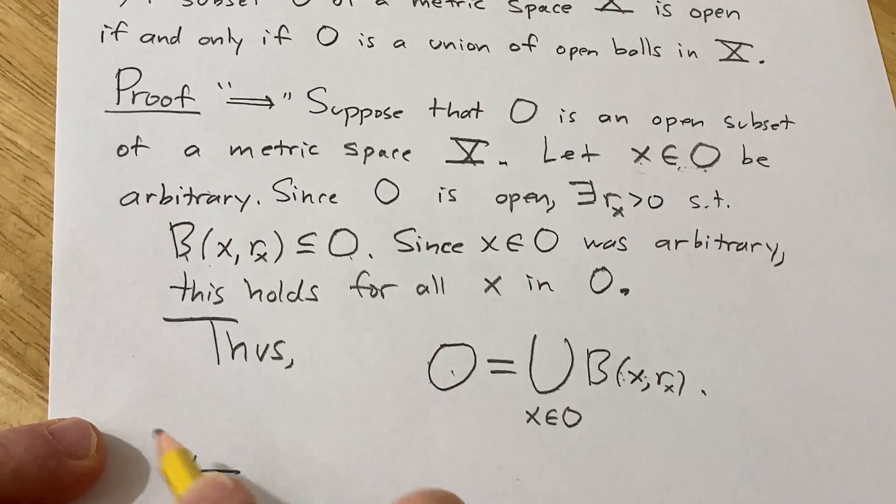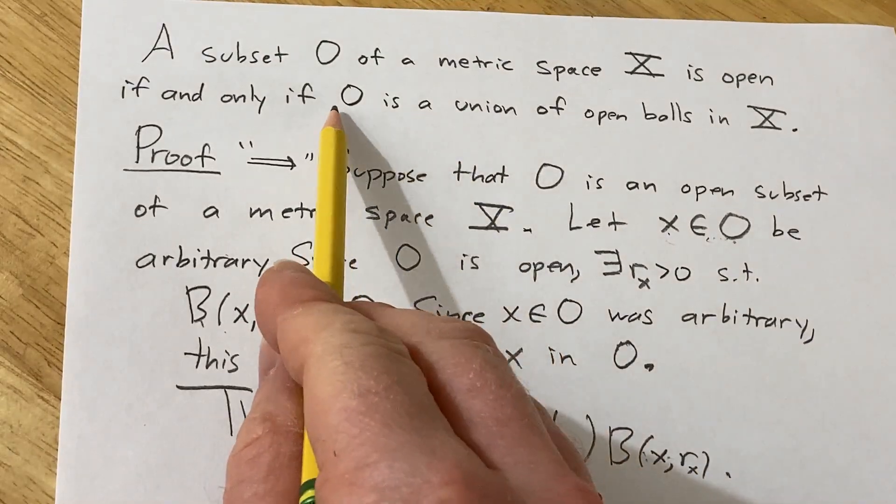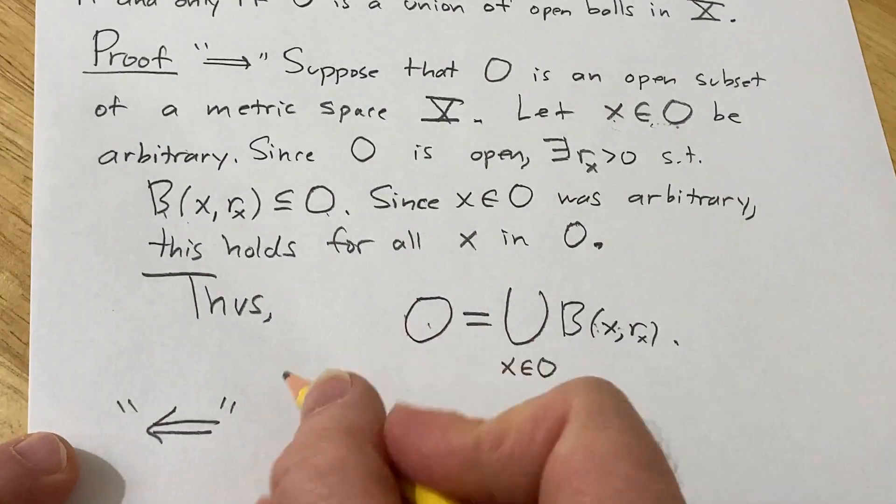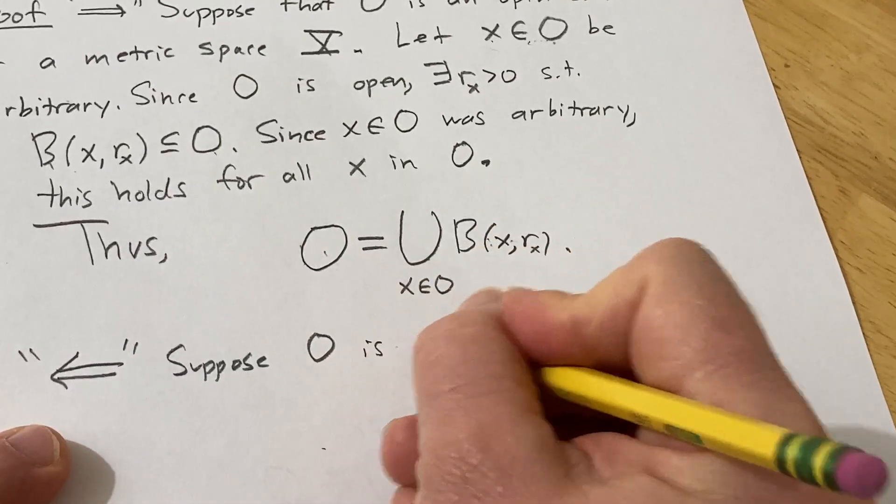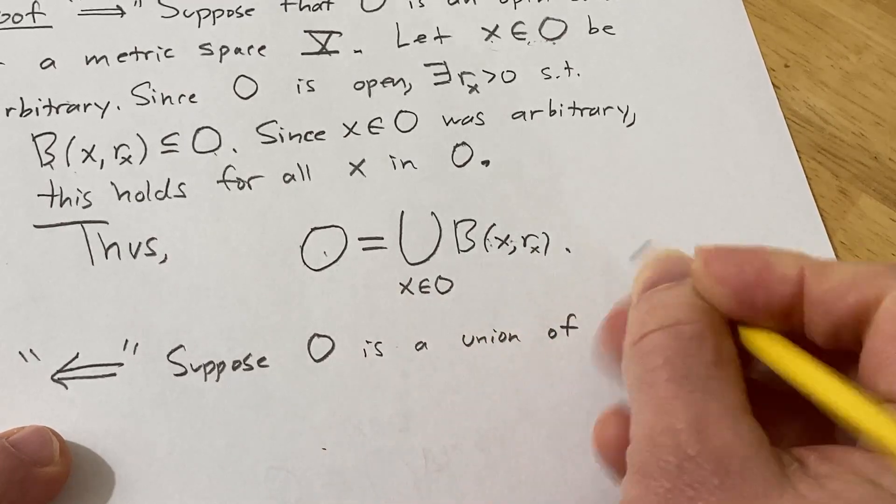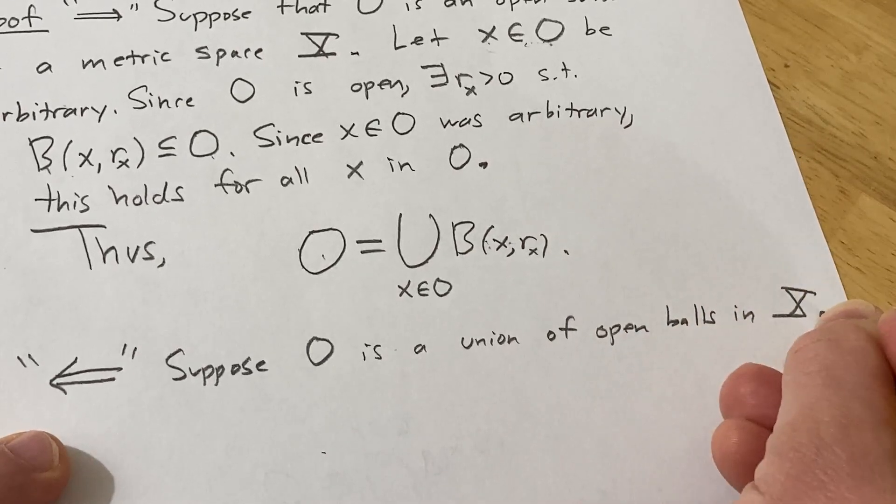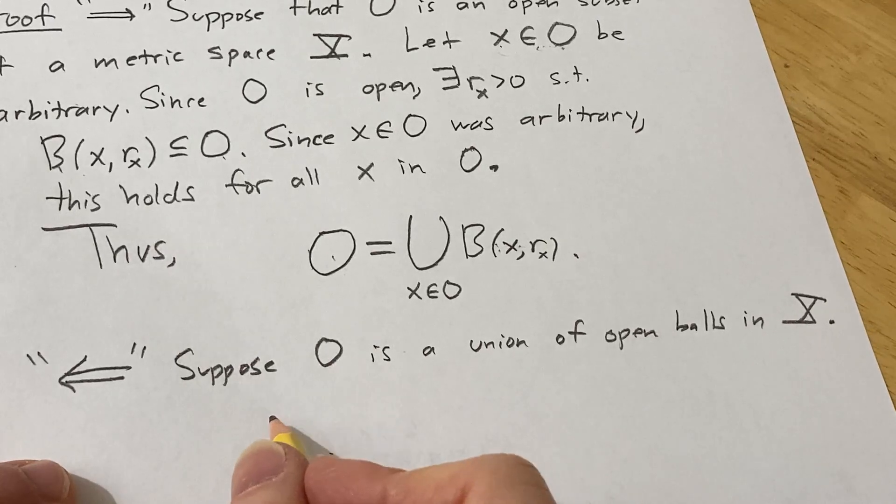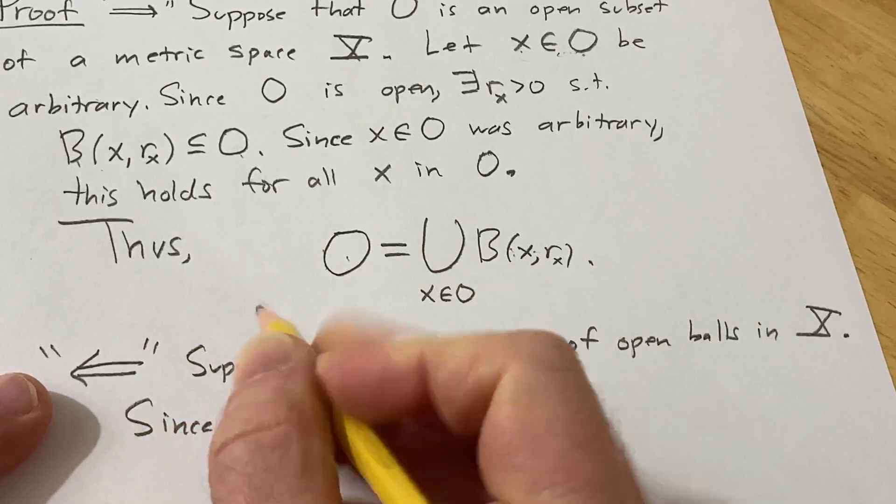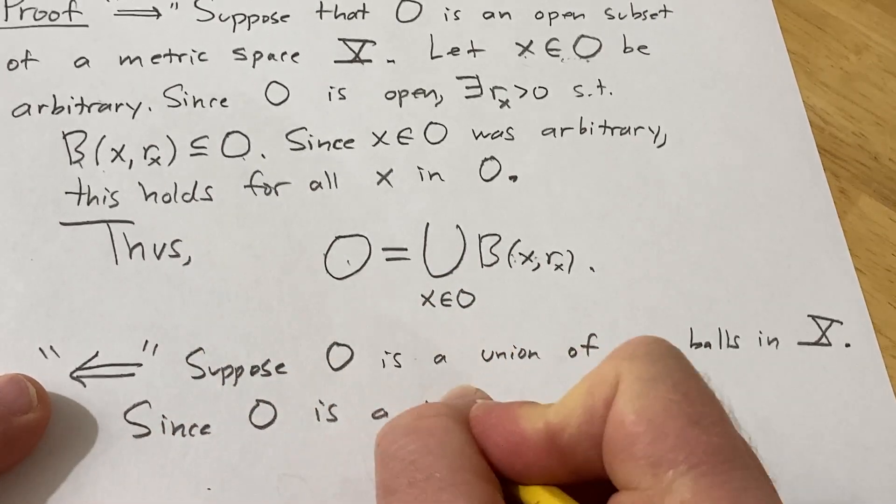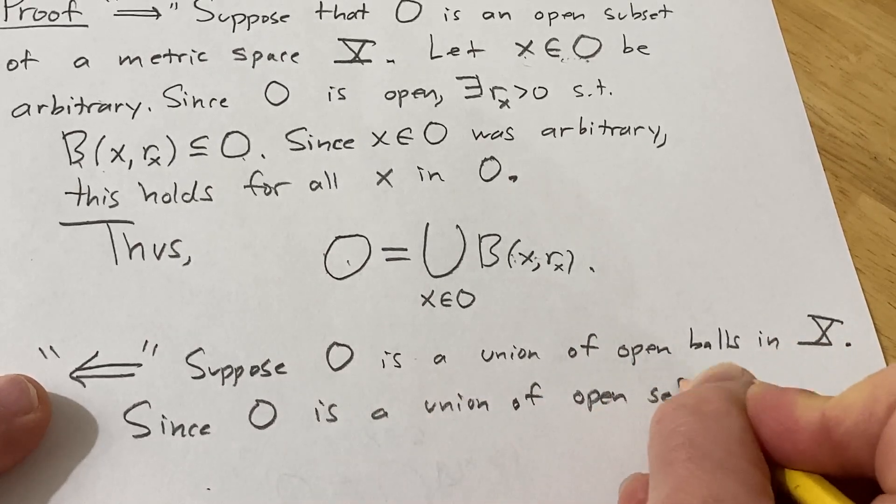Let's prove the other direction, which is much easier. We're going to invoke something that we've done before. So in this case, we're going to assume O is a union of open balls in X. So suppose O is a union of open balls in X. So we've already shown that the union of any family of open sets is open. So since O is a union of open sets, it is open.